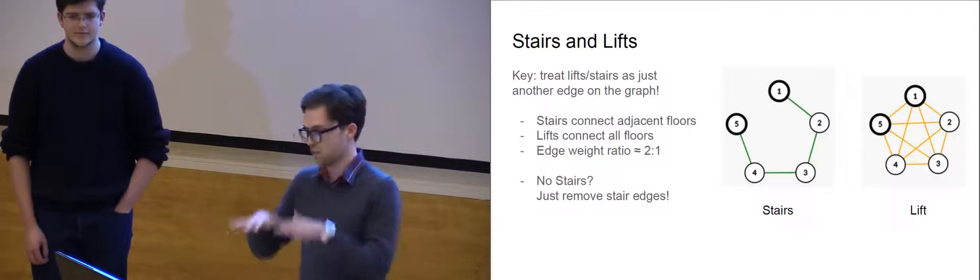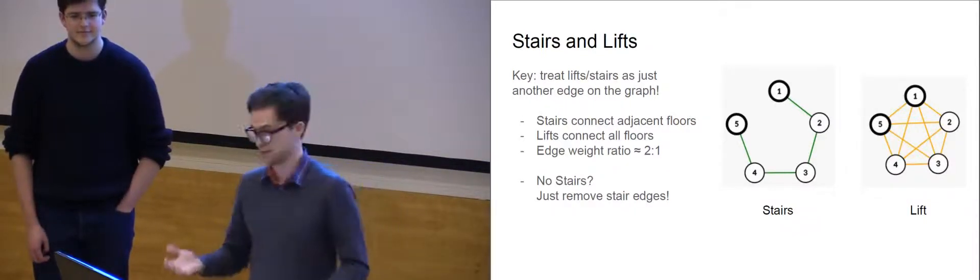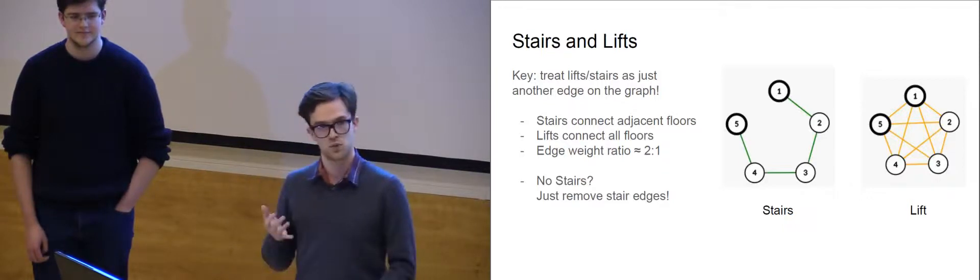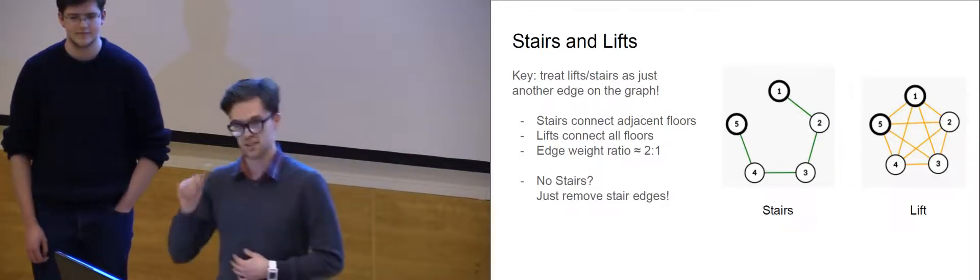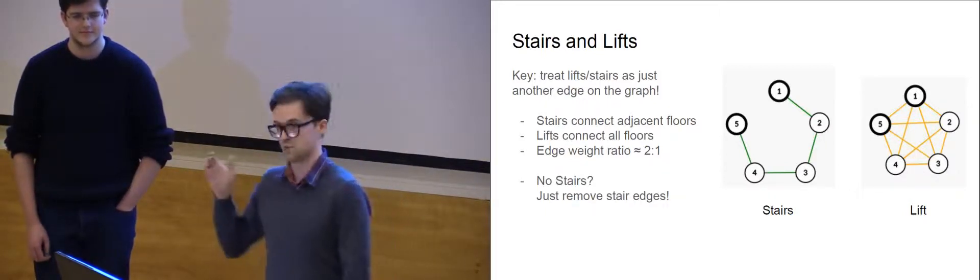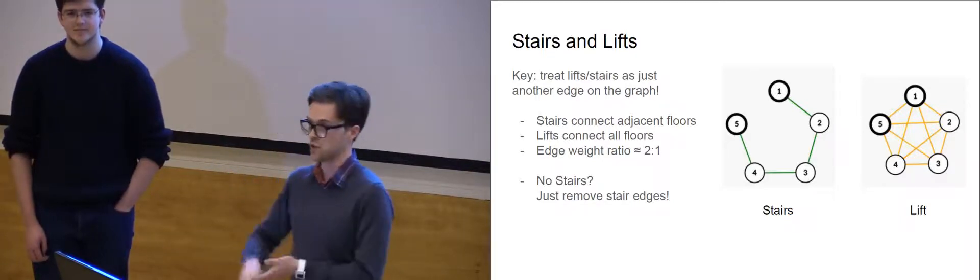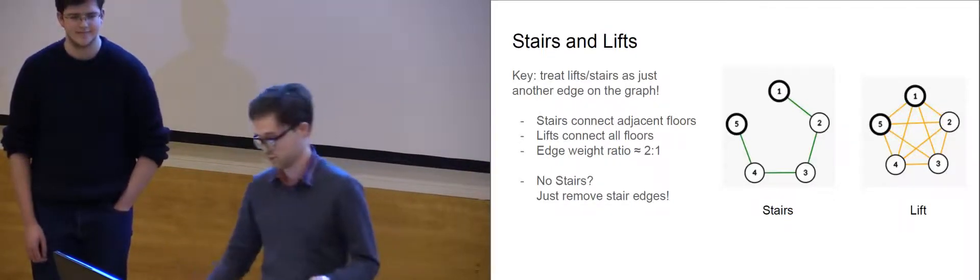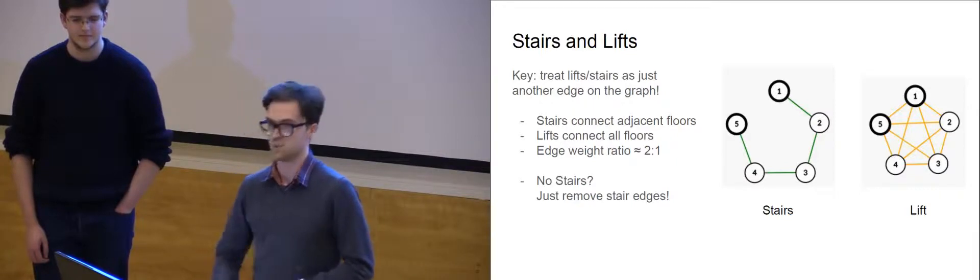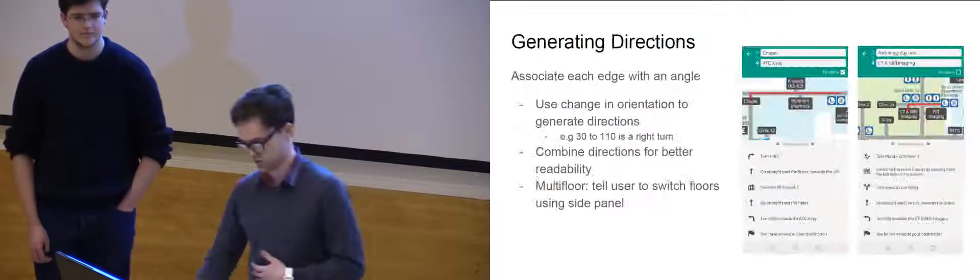So we've got connected graphs for each of the floors. We need a way to connect those up. The way we do that is using the stairs and the lifts. The only difference really between stairs and lifts is that for a stair vertex, we only connect it to the vertices directly above and below it. Whereas for a lift, we connect it to all of them because we consider it to be uniform cost, whether you're going up one floor or going up five floors. By default, we have it set so that it always takes the lift because of accessibility concerns, but you can remove that.